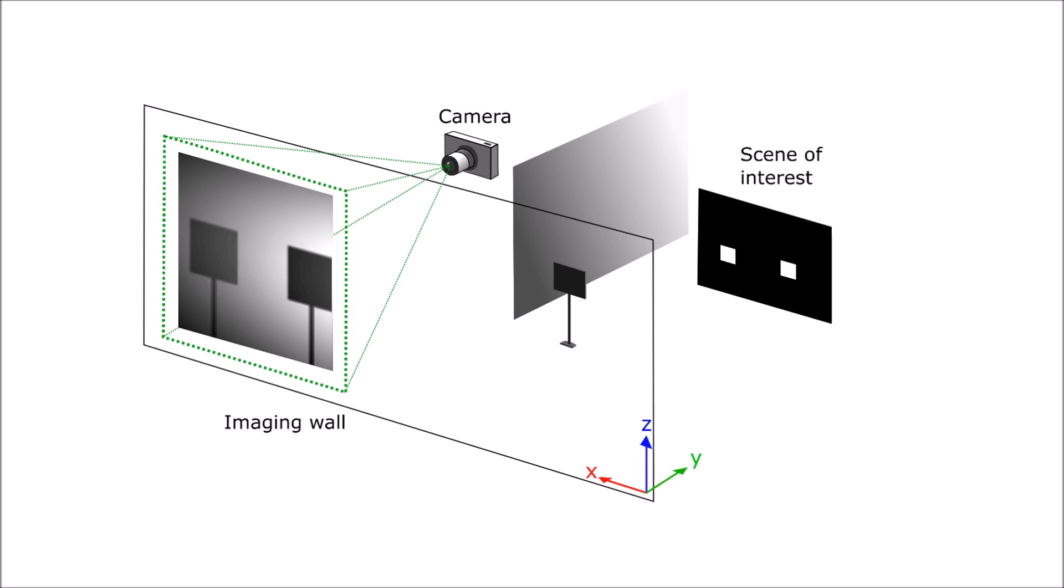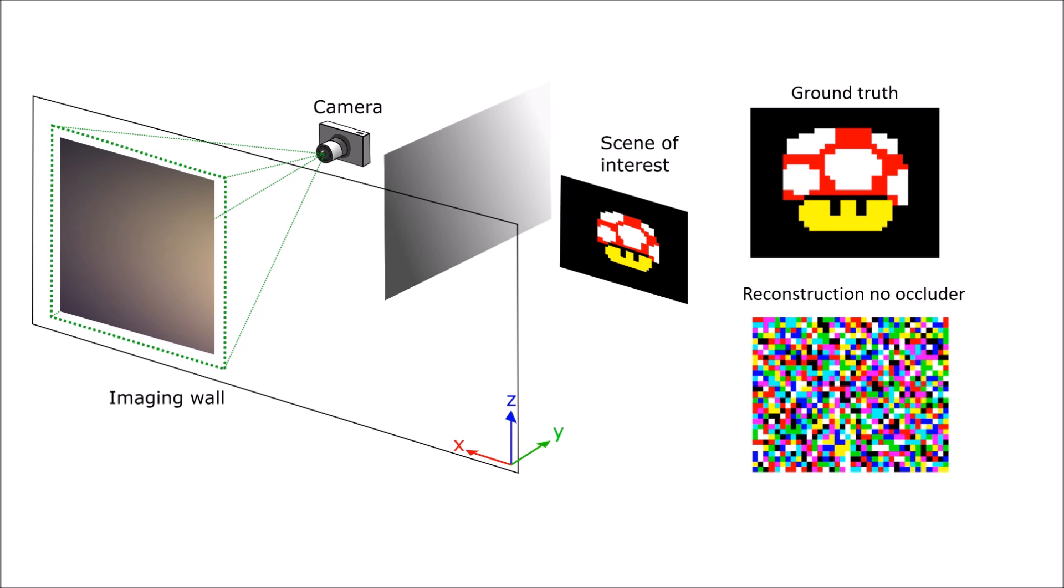For a more interesting scene, the camera capture becomes a mixture of the diffuse light radiating from the hidden scene, punctuated by shadows and penumbra cast by the occluding object. This phenomena improves the conditioning of the inverse problem of reconstructing the unknown hidden scene from a single camera snapshot.